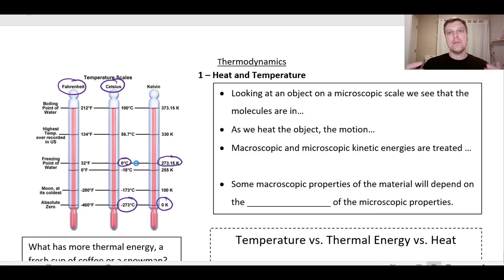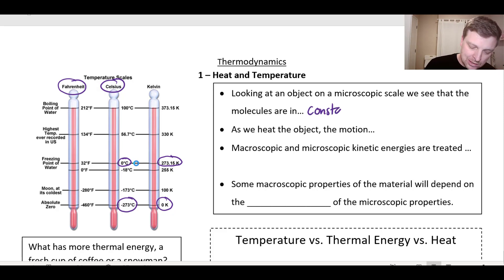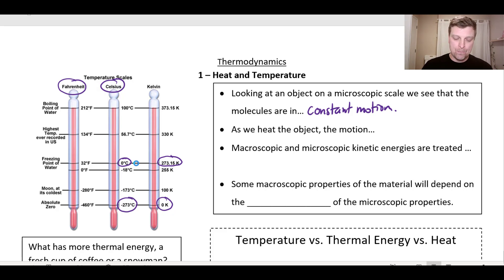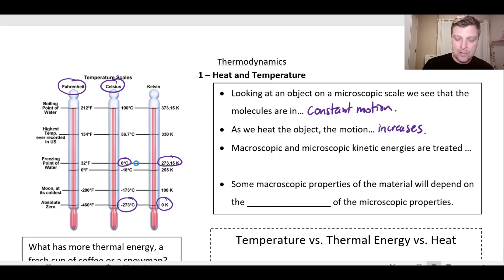When we look at something on a microscopic scale, we see that molecules are always in constant motion. The only time they're not moving would be if you got them all the way down to zero Kelvin — absolute zero — which is not possible in the real world, because then there would be no energy whatsoever. As you heat these particles up, the motion increases. So there must be a relationship between the kinetic energy of the particles and the heat that flows in or out of that system.